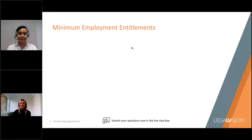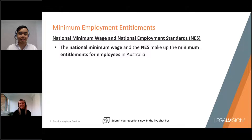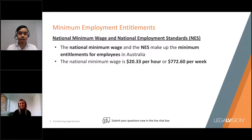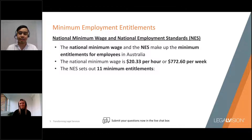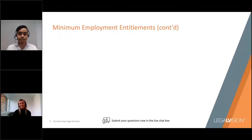The minimum entitlements for employees in Australia are the National Minimum Wage and the National Employment Standards, or the NES. The National Minimum Wage is currently $20.33 per hour and normally changes on the 1st of July each year. The National Employment Standards are contained in the Fair Work Act and are the minimum standards for Australian employees. There are 11 minimum entitlements in the NES, including requests for flexible working arrangements, leave entitlements, notice of termination and redundancy pay.